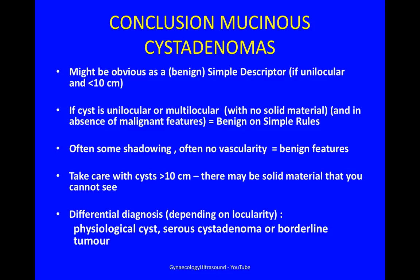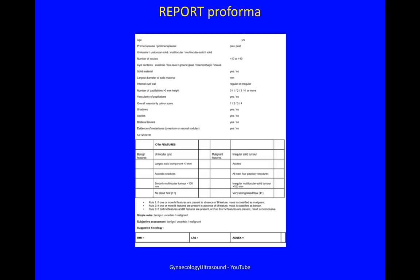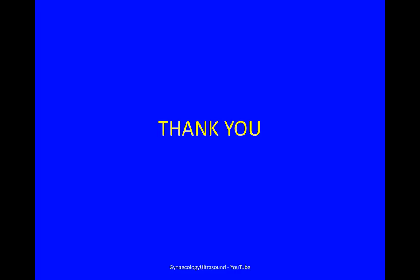The differential diagnosis, depending on locularity and appearance, could be a physiological cyst, a serous cyst adenoma, or a borderline tumour. This is the proforma that I use to record the various aspects of a cyst before I work out whether it fits any IOTA features, simple rules, or any other risk of malignancy calculators. Thank you.